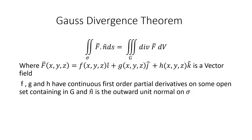Gauss Divergence theorem states that the double integral over the surface sigma of F dot n dS is equal to the triple integral over the volume G of the divergence of F dV, where F is a vector field whose components have continuous first-order partial derivatives on some open set containing G, and n-hat is the outward unit normal on sigma.